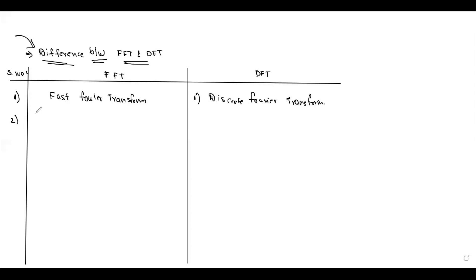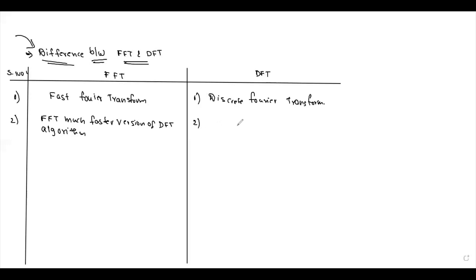Second point: FFT is a much faster version of the DFT algorithm. DFT is slow — it is the discrete version of the Fourier Transform.